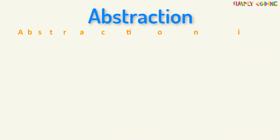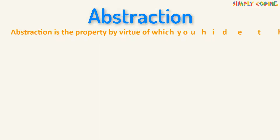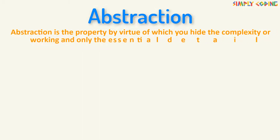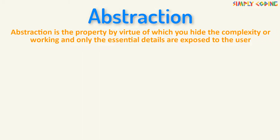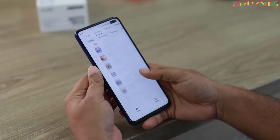So, what is abstraction? Abstraction is the property by virtue of which you hide the complexity or working, and only the essential details are exposed to the user.